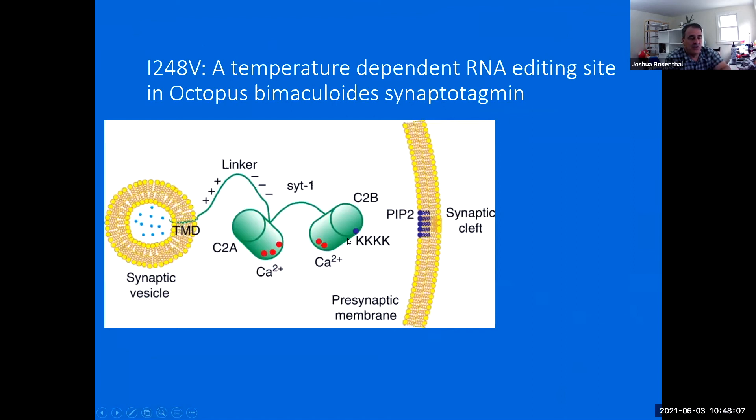So in synaptotagmin, this synaptotagmin participates in helping with other proteins, helping the synaptic vesicles fuse to the presynaptic membrane so they can dump out their neurotransmitter when calcium enters the presynaptic terminal from calcium channels. So we have calcium binding sites. They change their conformation and they help the synaptic vesicles fuse.